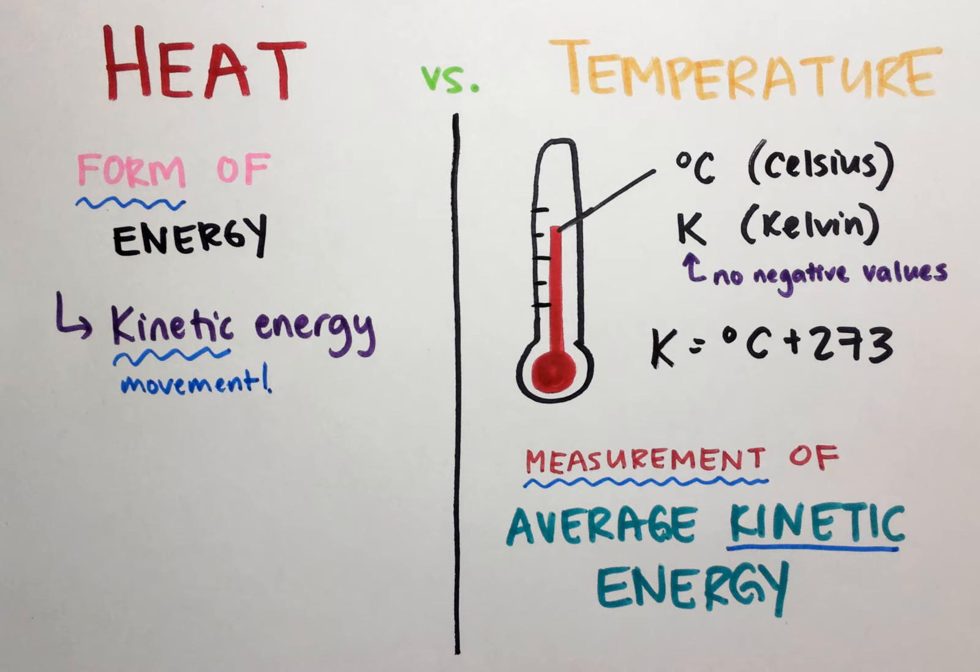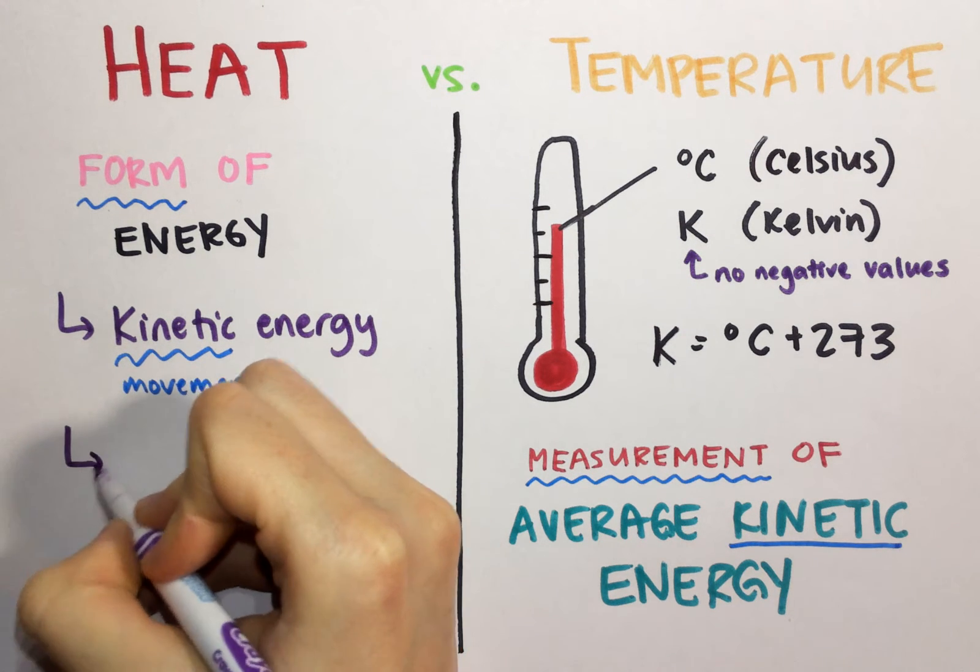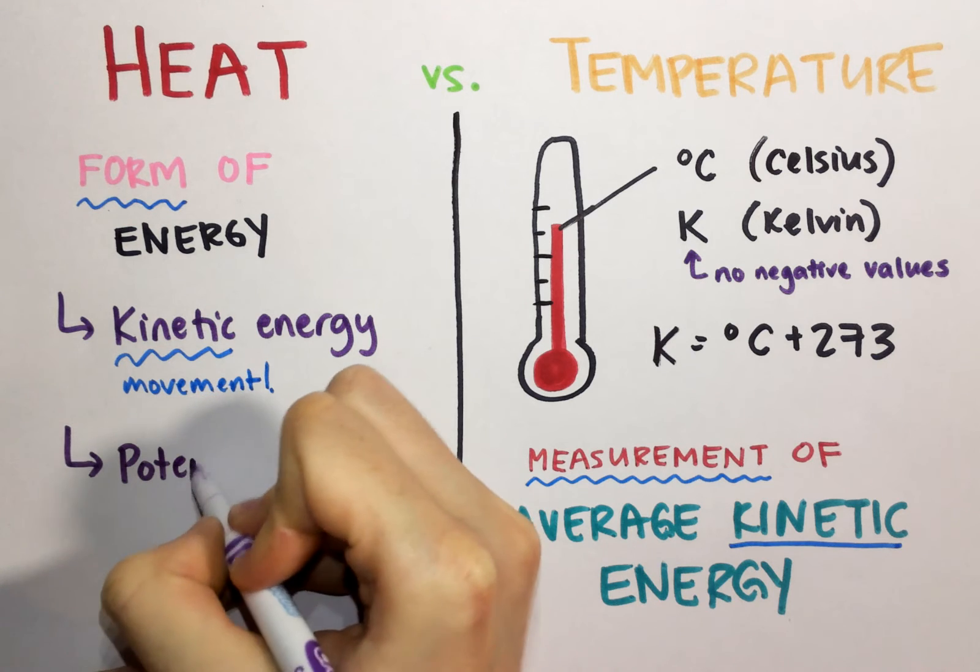However, not all energy is used to raise temperature. If you have a sample, we can be using that energy to sort of rip particles apart, make them more free to move, more free to react. That type of energy is known as potential energy.